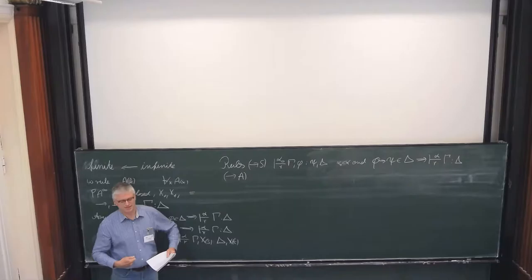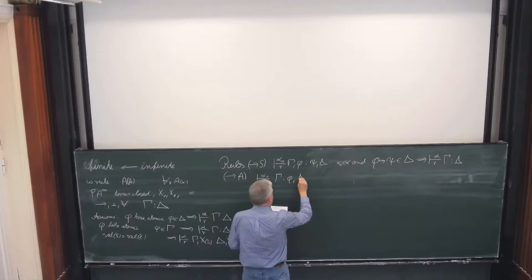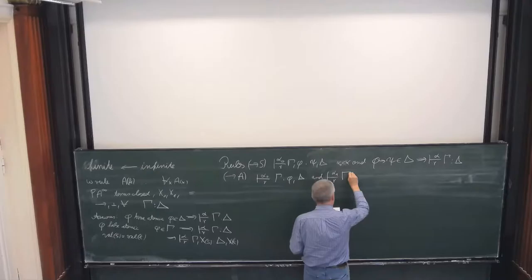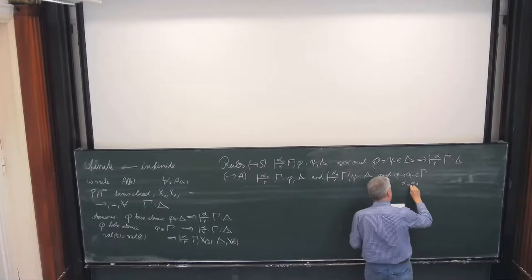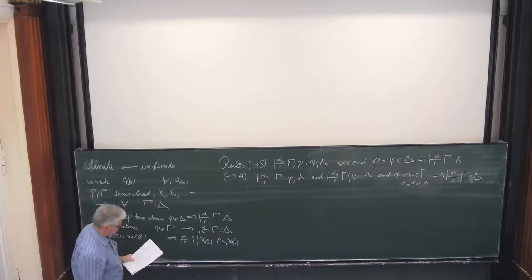The negated-implication case is complicated because showing a negated implication comes down to a contraction. If we have alpha_0 for gamma, phi, delta and alpha_1 for gamma, phi implies psi, in gamma, then we can derive alpha, r, gamma, delta. We have rules for the universal quantifier, and the universal introduction for the succedent is the omega rule. It is important to have infinitely many premises here.